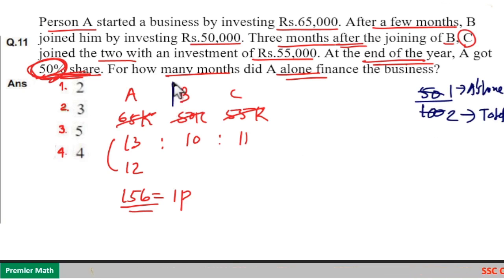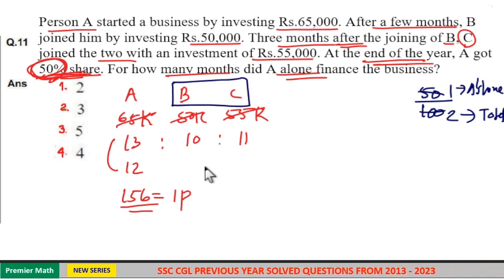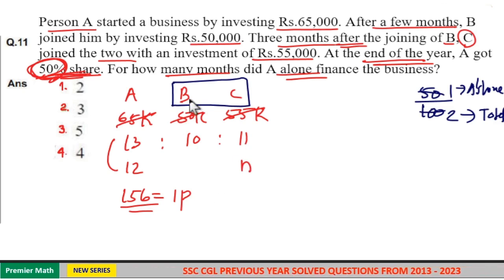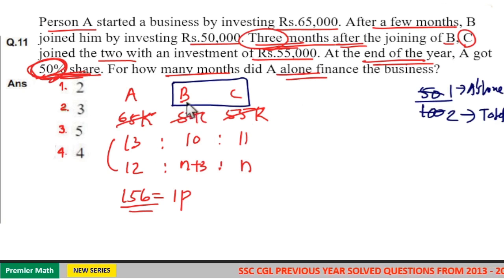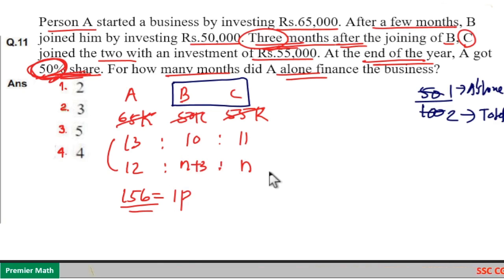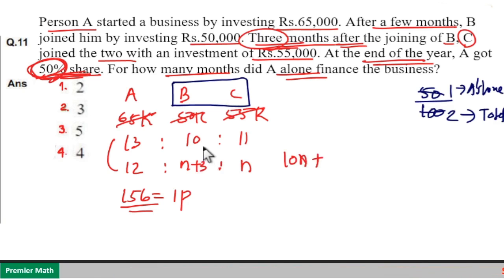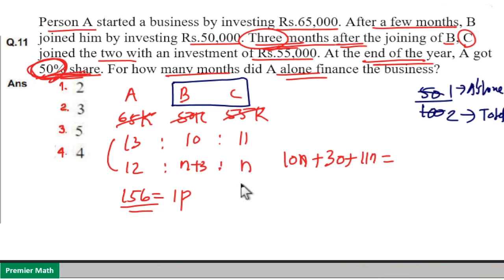The remaining 1 part is B's plus C's share. Now if C invested for N months, then B invested for N plus 3 months, because C joined 3 months after B — that is, B invested 3 more months than C. So B plus C share equals 10 × (N + 3) + 11 × N, which equals the remaining 156 part.